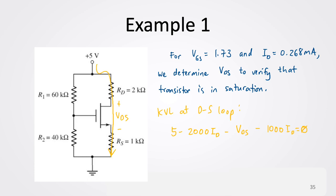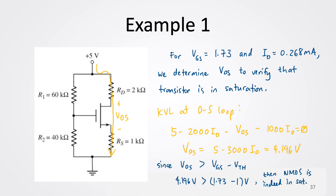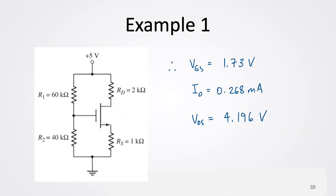Now we determine VDS to verify that the transistor is indeed in saturation. Writing KVL at the drain-to-source loop: 5 minus 2000·ID minus VDS minus 1000·ID equals zero. Grouping the ID terms: 5 minus 3000·ID, and substituting ID = 0.268 mA gives VDS = 4.196 V. Since VDS = 4.196 V is greater than VGS minus VTH = 1.73 minus 1 = 0.73 V, the NMOS is indeed in saturation. Summary: VGS = 1.73 V, ID = 0.268 mA, VDS = 4.196 V.